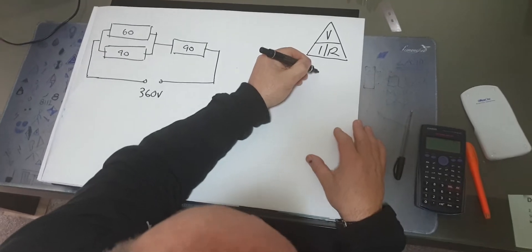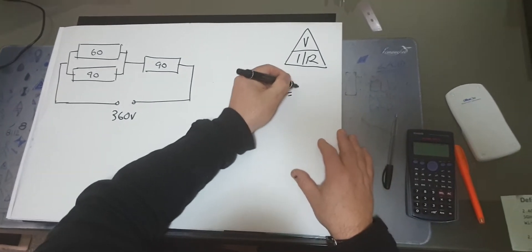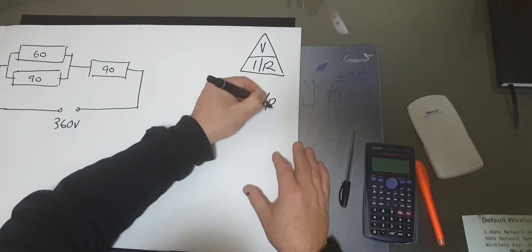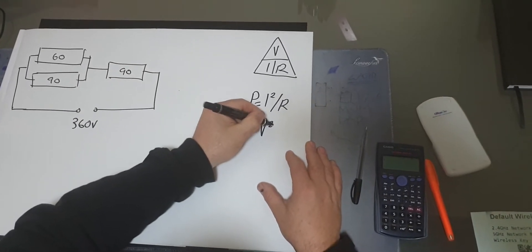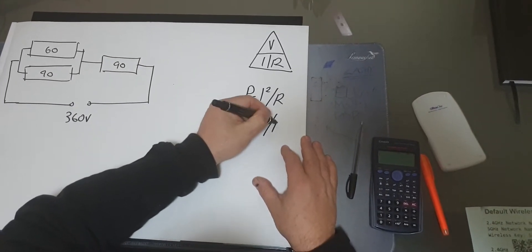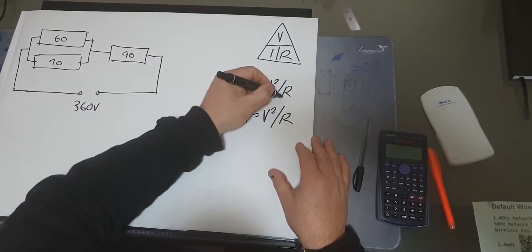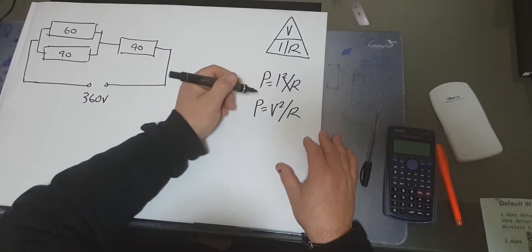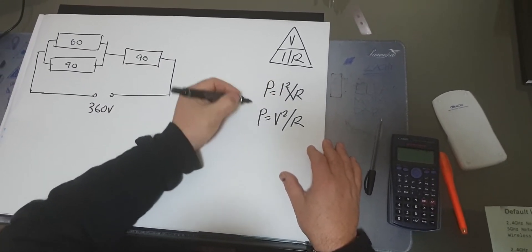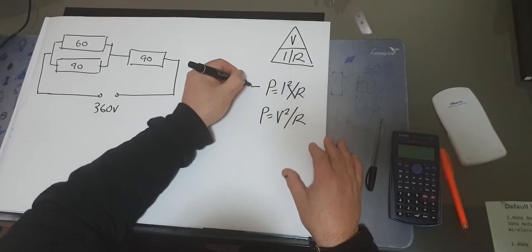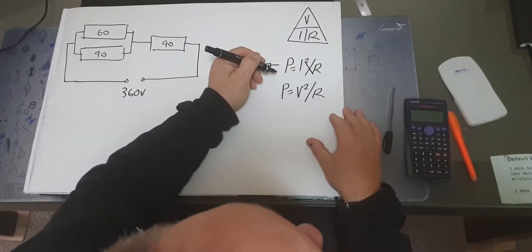Then we have the power formula: P equals I squared times R, and P equals V squared over R. We tend to use I squared times R when we're using a single resistor — I'll show you that in an example later.